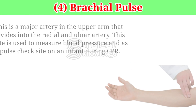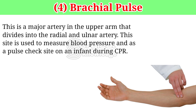Brachial pulse. This is a major artery in the upper arm that divides into the radial and ulnar artery. This site is used to measure blood pressure and as a pulse check site on an infant during CPR.